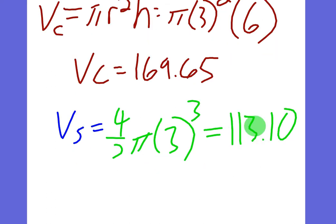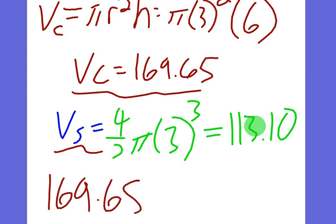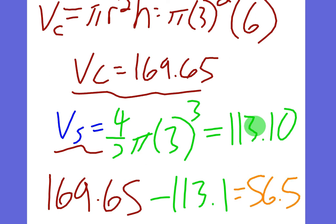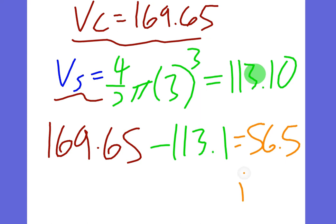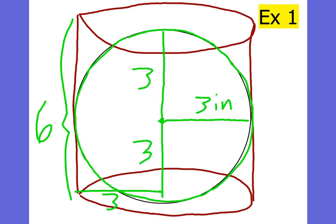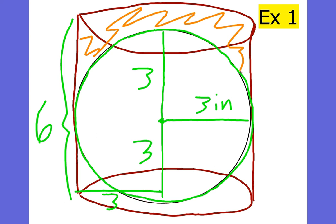To figure out the final answer, you do the volume of the cylinder minus the volume of the sphere, which gives us 56.55 — we'll round it to the tenth. The units would be inches cubed, because you're just finding the volume. What we just found was basically the volume around the sphere that's inside of the cylinder, and that's how you do inscribed stuff.